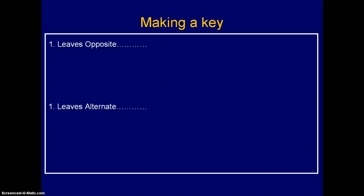The first choices you have to make in this particular key will be that either number 1 — leaves are opposite — or number 1 — leaves are alternate. Those are your two choices; there's your starting point. If it's leaves opposite, we realize that there's more than one choice of leaves opposite, and therefore we have to take it to number 2.